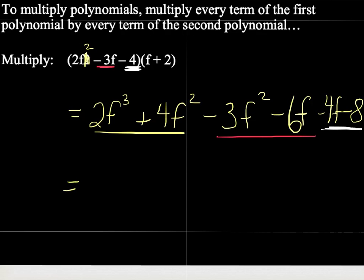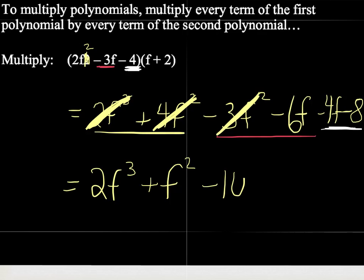Combining everything together, we get 2f cubed, the only cube term. 4f squared minus 3f squared is 1f squared, or just f squared. And then we have minus 10f by combining the minus 6f and the minus 4f. And finally, we have a minus 8 on the end. And we're done.